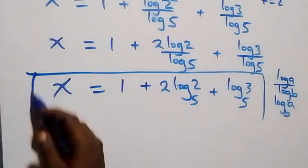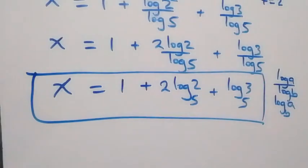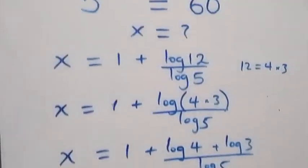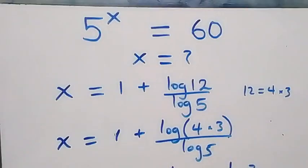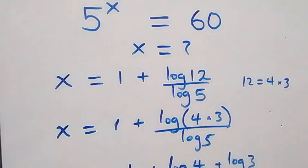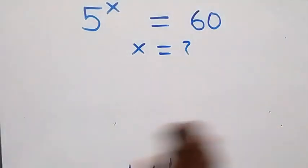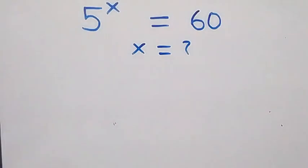So the value of x in this problem is x equals 1 plus 2·log₅2 plus log₅3. Now let's verify that this satisfies the original equation.